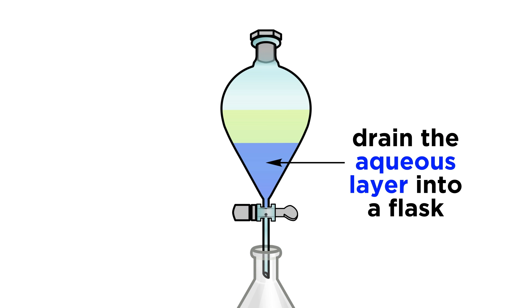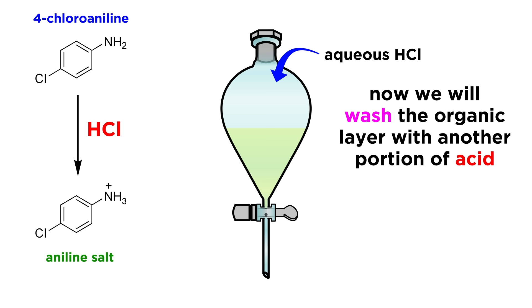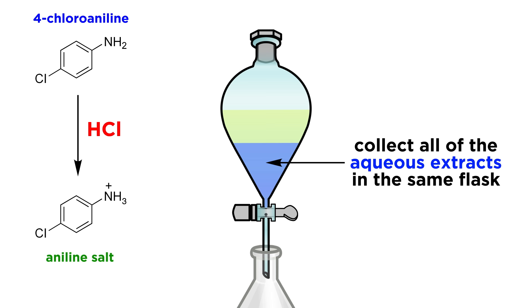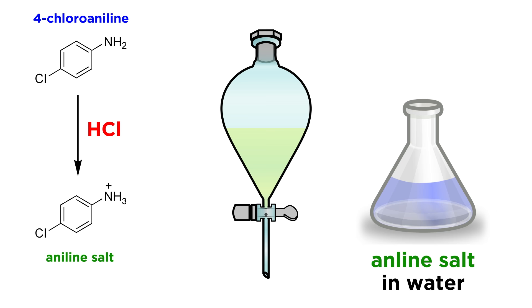Then just drain the aqueous layer into a new labeled flask. To be thorough, we will typically wash the organic layer again with another portion of the acid, and repeat the whole process, and then maybe even one more time with just deionized water, collecting all three aqueous extracts in the same flask. Now we've got our aniline salt sitting in water, and we can put it aside for a moment.